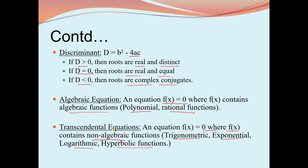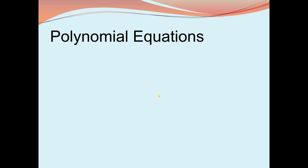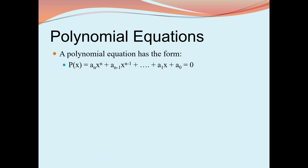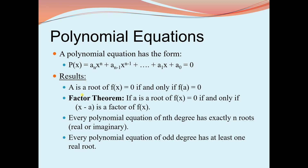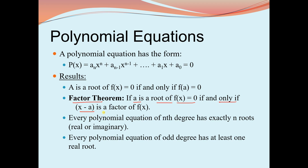Moving to polynomial equations: the general form is aₙxⁿ + aₙ₋₁xⁿ⁻¹ + ... = 0. An important result: 'a' is a root of f(x) if and only if f(a) = 0. By the factor theorem, if 'a' is a root of f(x) = 0, then (x - a) is a factor of f(x).